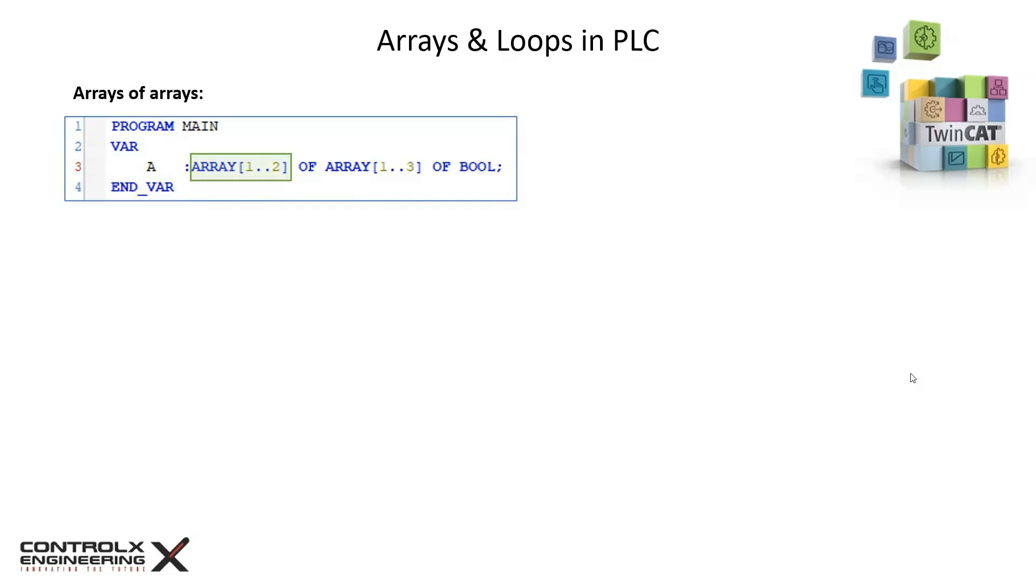Here's an example declaration of an array a containing two elements. Each element itself is an array containing three elements of boolean data type.